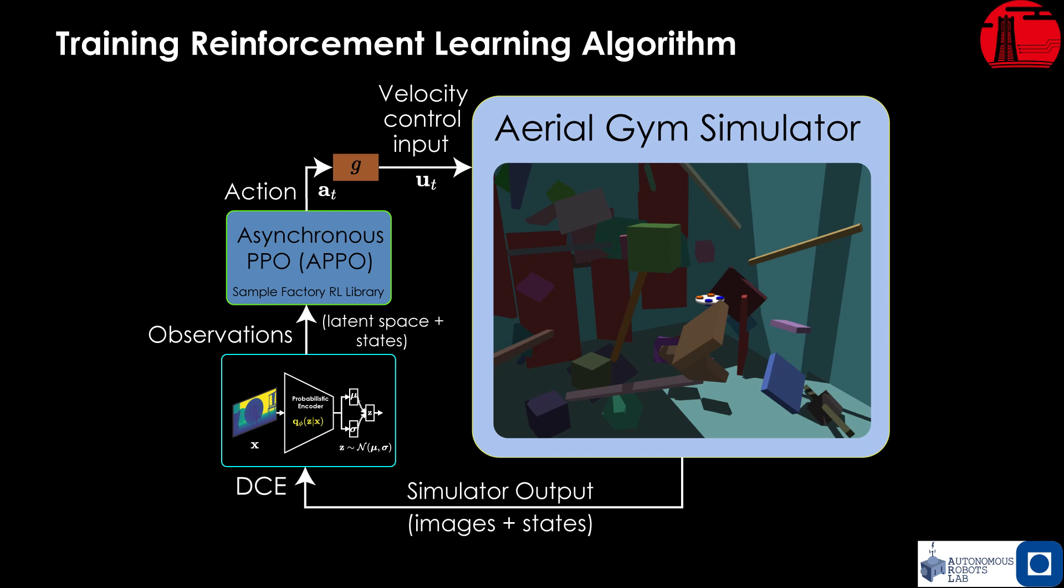We use the asynchronous proximal policy optimization algorithm to train the policy. The aerial gym simulator provides the observations, that is the latent space and states, and the policy outputs velocity and yaw rate commands, which are then used to control the agent in the simulator.